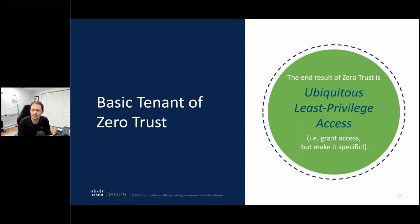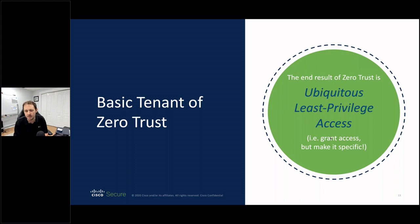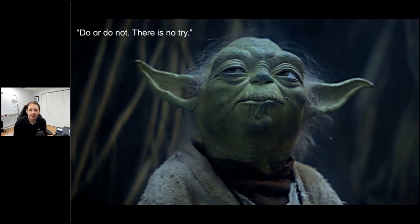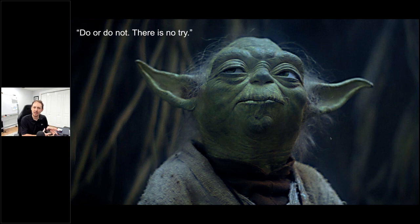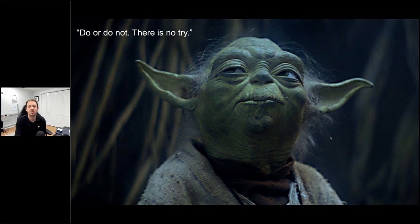At a very basic level, the core tenet of zero trust is ubiquitous least-privilege access — grant access, but make it specific. 'Ubiquitous' means everywhere, and that's one of the toughest parts. It's easy to say you have Active Directory and restrict file access by group, but when you start applying least privilege across every single asset and resource, it becomes very difficult very quickly. You're either working toward zero trust or you're not — there is no try.